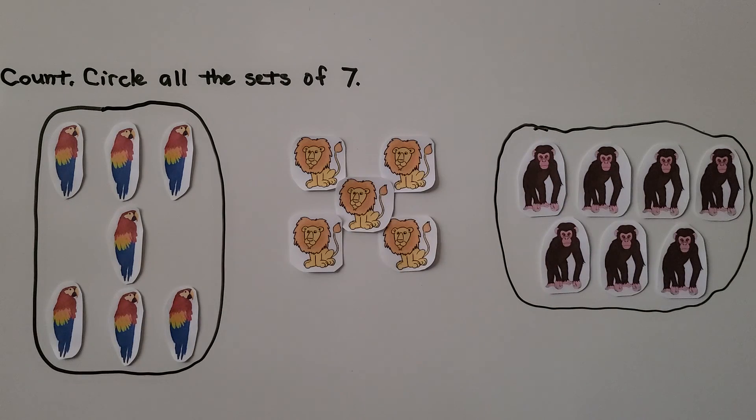We needed to circle all of the sets of 7 and we found 7 parrots and 7 chimpanzees.